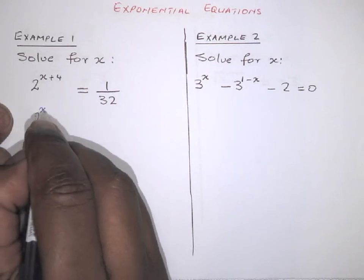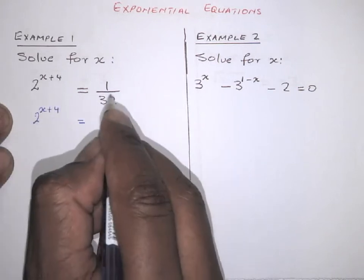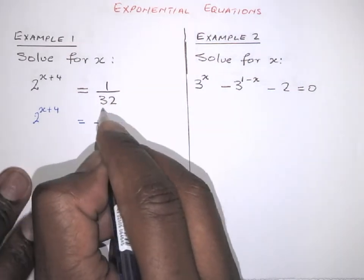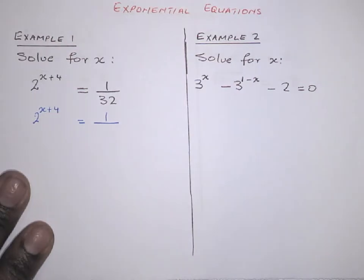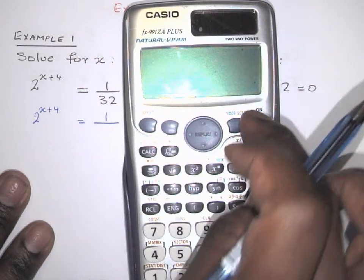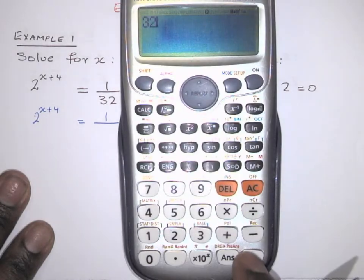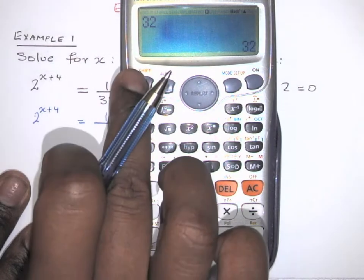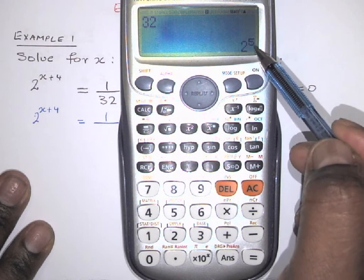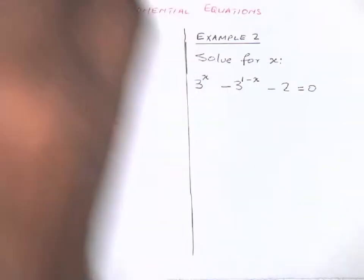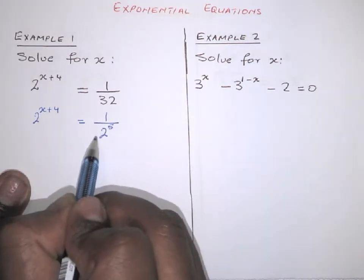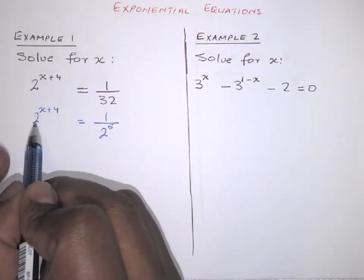We have 2^(x+4) equal to 1 over 32. Since 32 is not a prime, we need to change it. You can use your calculator: type 32, press equals, then shift and 'fact', and you'll see 2^5. So instead of 32, we write 2^5.